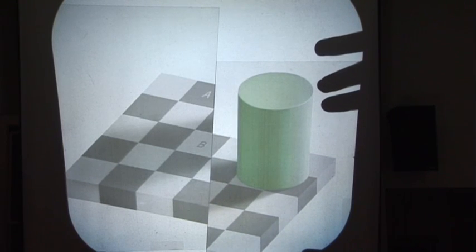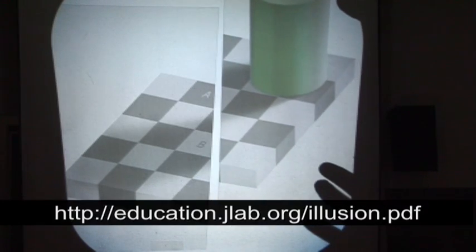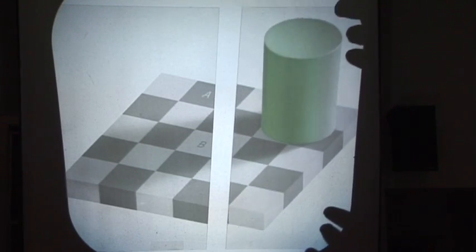Square A and square B really are the same color. Still don't believe us? You can download the graphic from our website, print it out, cut it, and try it for yourself.